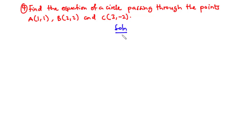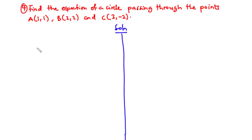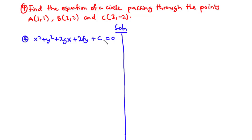Let's solve this problem together. We know that the general equation of a circle is given by x squared plus y squared plus 2gx plus 2fy plus C equals 0. For any point P(x, y), we are going to substitute the values of the coordinates into the general equation of a circle.